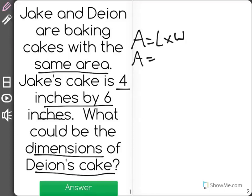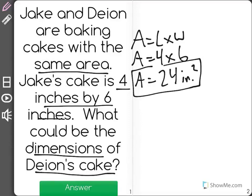Well, if Jake's cake is 4 inches by 6 inches, then Jake's cake has an area of 24 inches squared. Now, we're going to look at the answer choices to see which one also has an area of 24 inches squared.